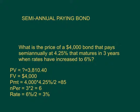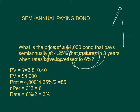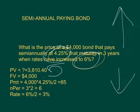Here's my check: interest rates went up from 4.25% to 6%, so bond prices should go down. Did it go down? Yes — I went from $4,000 to $3,810.40. My bond price did go down. That's the check. Hopefully this helped you get through your bond problems. Good luck.